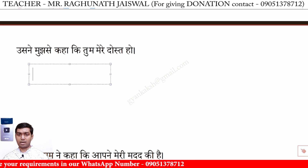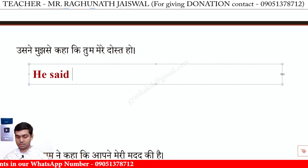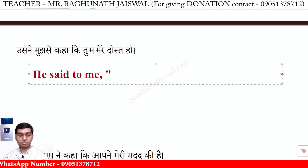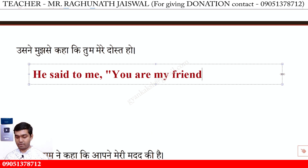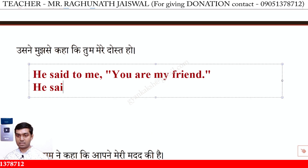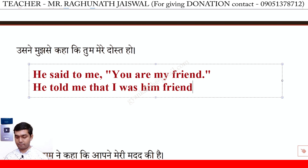Us ne mujhse kaha ki tum mere dost ho. Direct: He said to me, 'You are my friend.' Indirect: He told me that I was his friend. Note: 'said to' becomes 'told' in indirect speech.